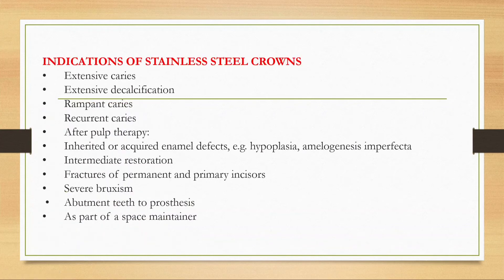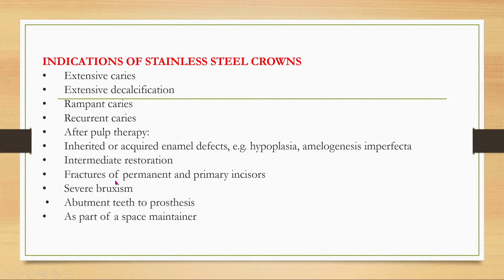Indications of stainless steel crown: extensive caries or extensive decalcification, recurrent or rampant caries, after pulp therapy to protect the tooth, enamel defects such as amelogenesis imperfecta or hypoplasia, intermediate restoration, fracture of primary incisors, severe bruxism, and when needed as a prosthesis abutment.